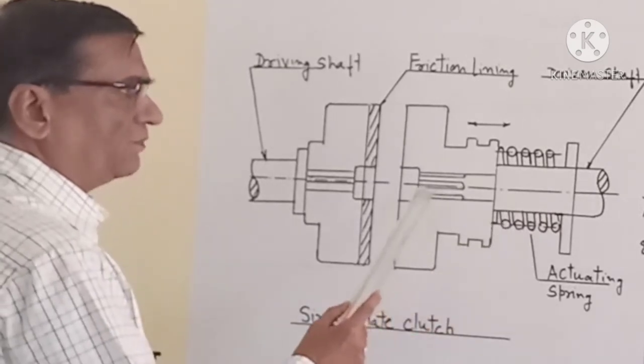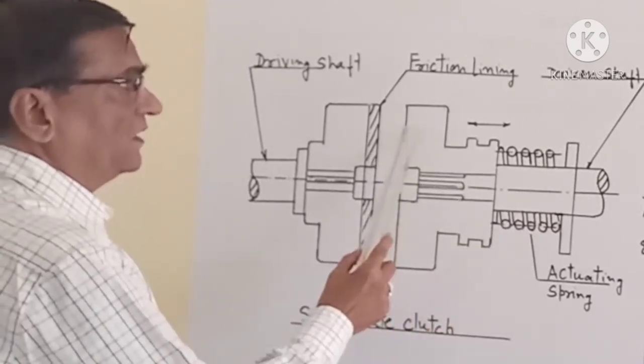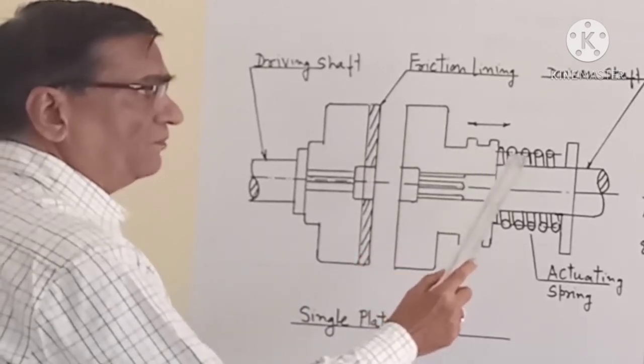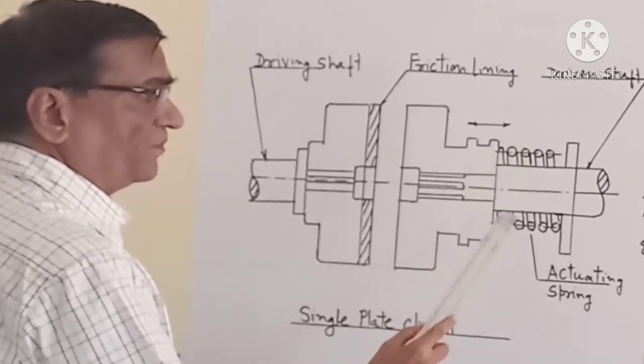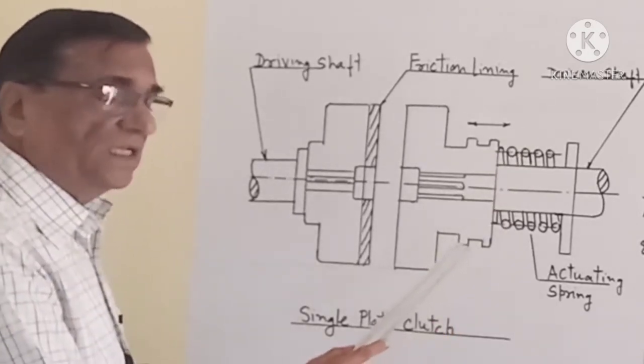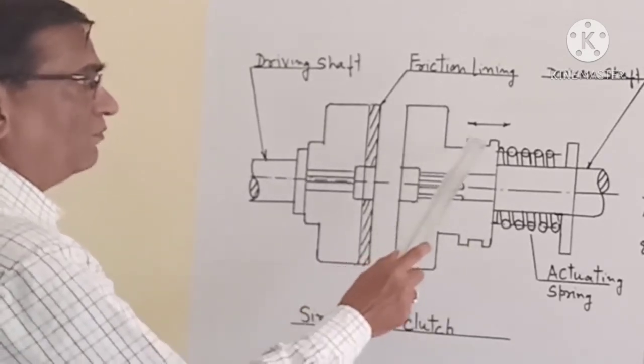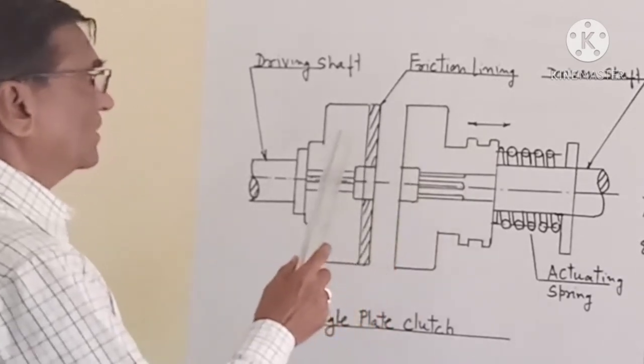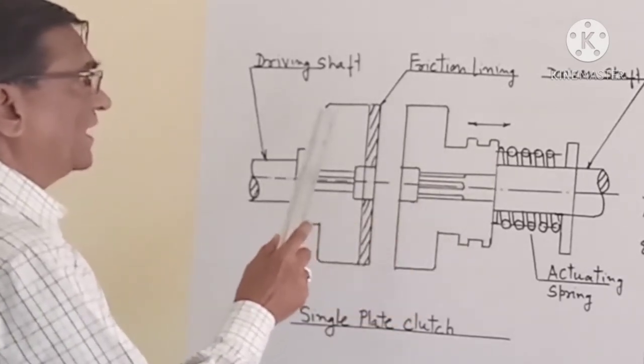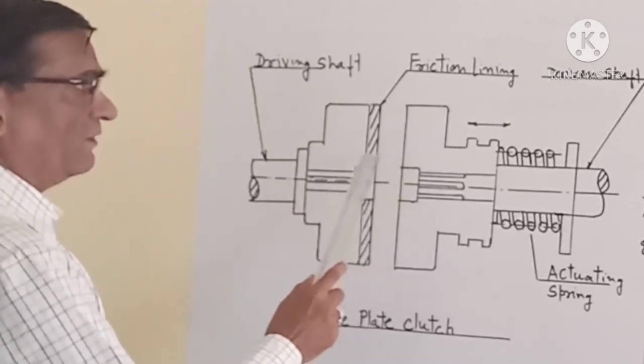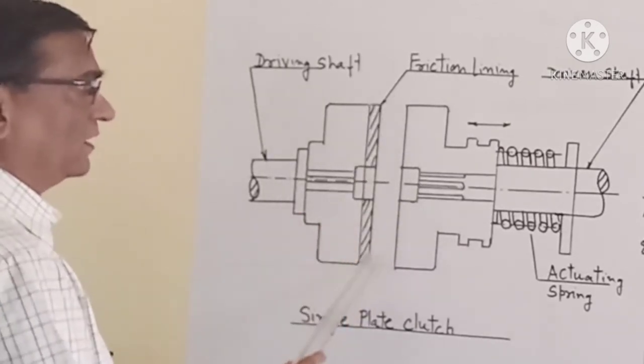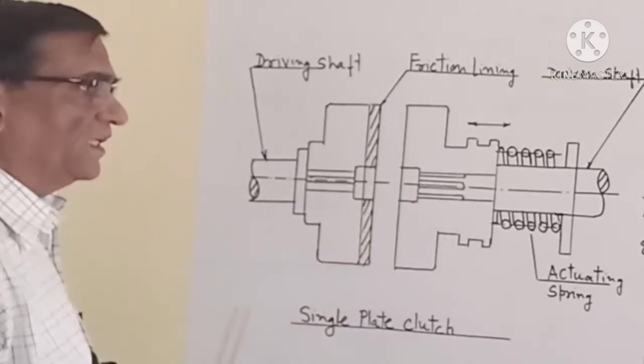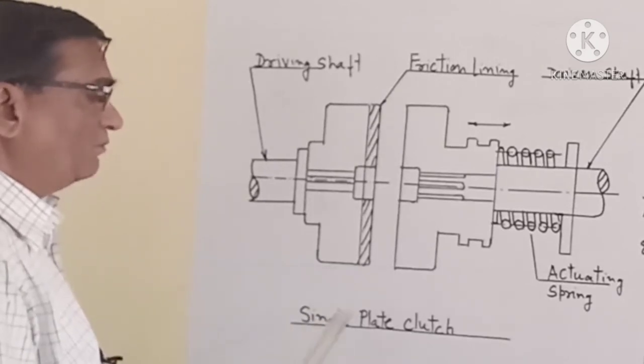This shaft is splined at this end so that this disc can move to and fro under the spring pressure. This is a helical coil spring. Here space is provided for the lever, and with the help of the lever we can move the disc to and fro so that the driven shaft may be attached to the driving shaft whenever required when it comes in contact with this friction lining. So this is the working of the friction single plate clutch.